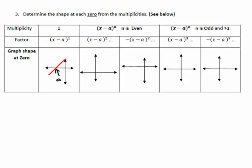It's with higher order multiplicities that things get different. If we have an even multiplicity — 2, 4, 6, 8 — the multiplicity determines the shape and the sign out front determines whether it points up or down. With a multiplicity of 2, the graph comes down, much like a quadratic, and bounces off forming that parabolic shape. If the term outside the bracket is negative, the graph bounces downward instead.